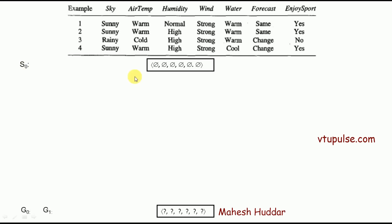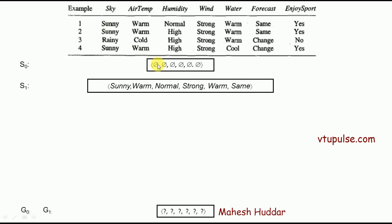We then go to the specific boundary and check whether the hypothesis there is consistent. The hypothesis at the specific boundary contains all nulls, which will not match with sunny, warm, normal, strong, warm and same. Because it does not match, it is a negative classification, but we are expecting positive. So it is inconsistent. We write the next general hypothesis: S1 is sunny, warm, normal, strong, warm and same — each null replaced with the corresponding value from the first example.